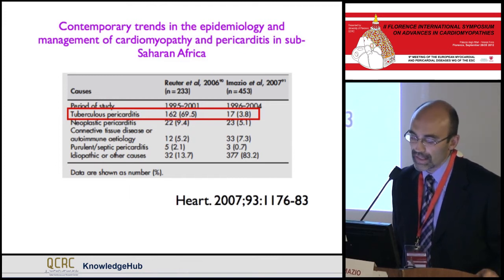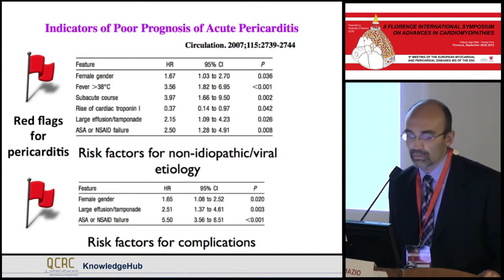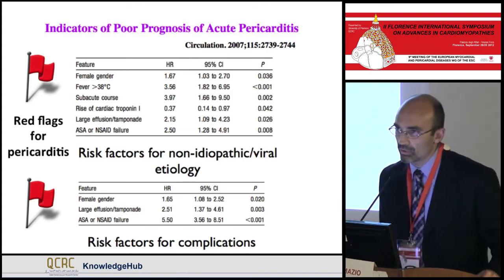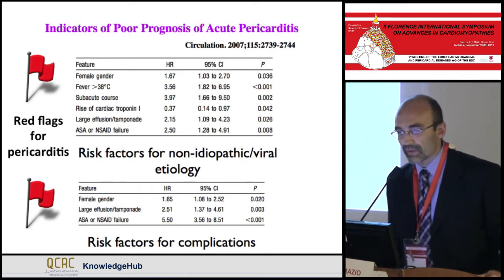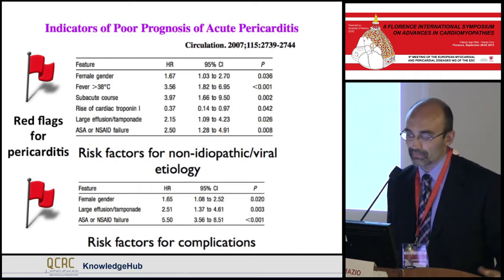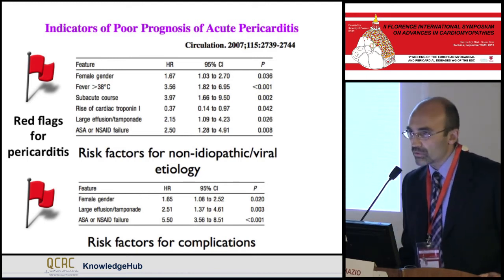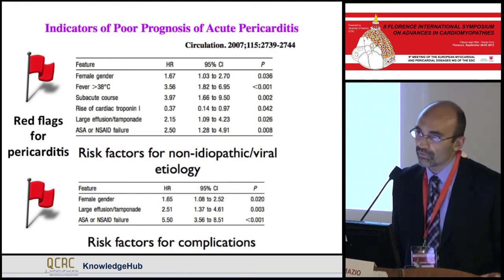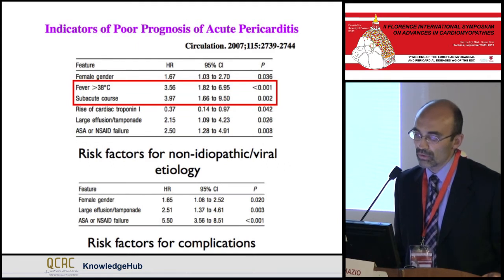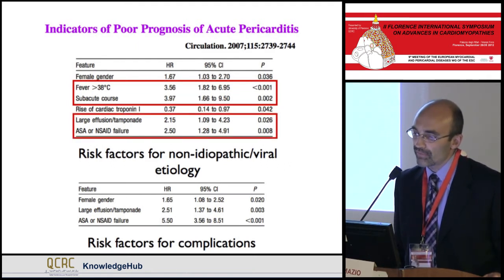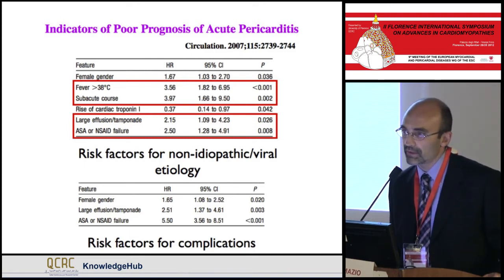The presentation should guide treatment. There are red flags for pericarditis allowing a clinically oriented etiologic search. Specific features at presentation help identify high-risk patients — those at risk of a non-idiopathic, non-viral etiology and those at risk of complications. In a prospective cohort study of 453 patients, multivariable analysis found that high fever, subacute course, large effusion, or cardiac tamponade at presentation are risk factors for a non-idiopathic etiology, as is failure of aspirin or NSAIDs after at least one week of therapy.